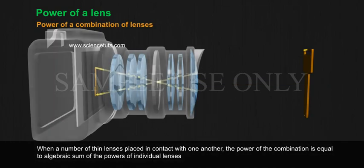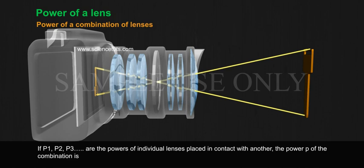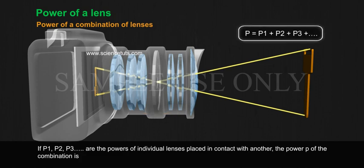Power of a Combination of Lenses: When a number of thin lenses are placed in contact with one another, the power of the combination is equal to the algebraic sum of the powers of individual lenses. If P1, P2, P3, and so on, are the powers of individual lenses placed in contact with one another, the power P of the combination is P equals P1 plus P2 plus P3 plus, and so on.